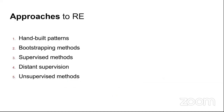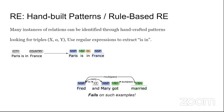There are five types of approaches to relationship extraction, each tried by different researchers. The state-of-the-art F-score has not yet crossed 89–90, so there is still scope for improvement. The first approach is hand-built patterns — essentially rule-based relationship extraction. Many relationship instances can be identified through manually coded handcrafted patterns.